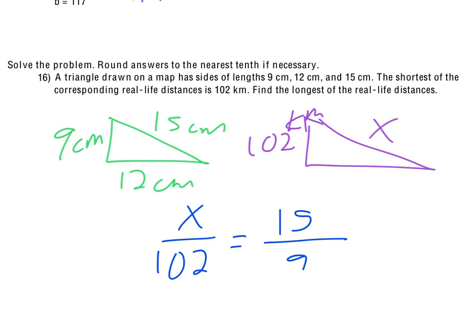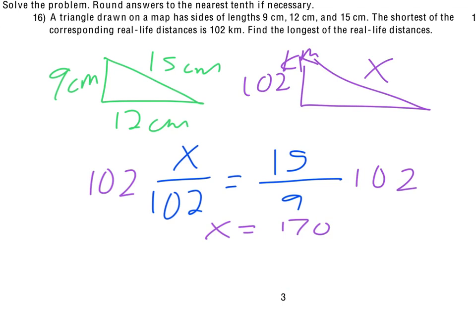Again, you know, wanting you to be able to set these up because they're not always nice numbers, so here's why. Again, you could do the whole cross multiply and divide. I would just multiply both sides by 102. This actually works out to be a nice number. We get 170 when we do 15 divided by 9 times 102. So, the longest real life distance would be 170 kilometers.